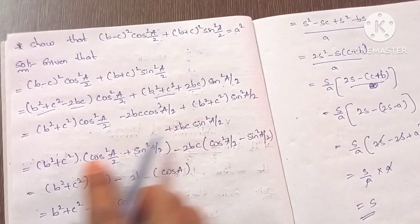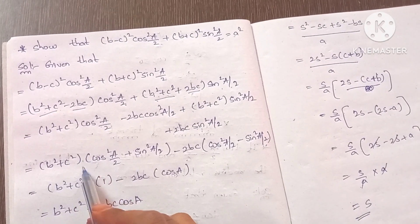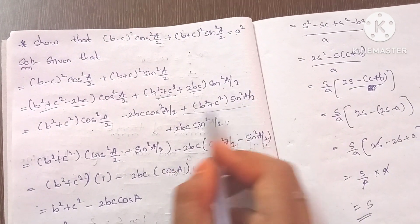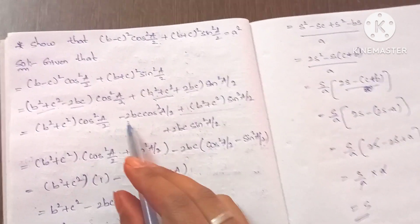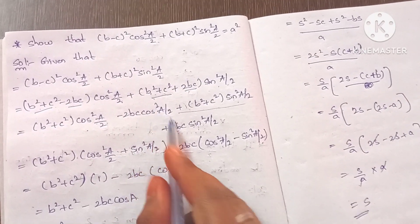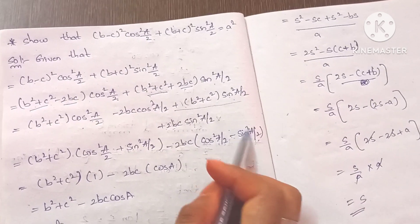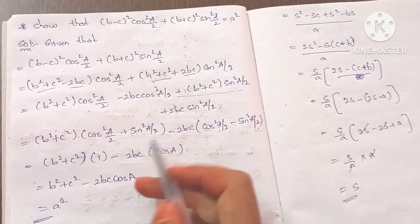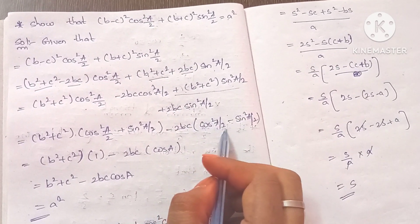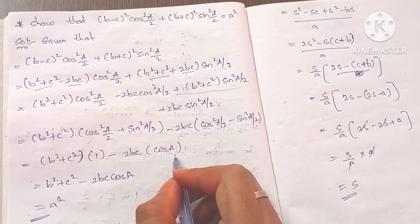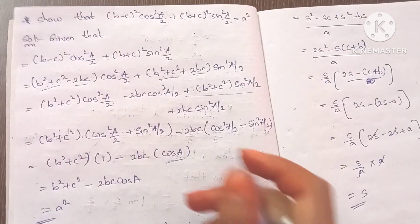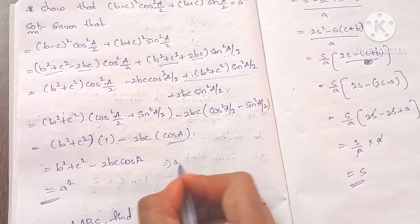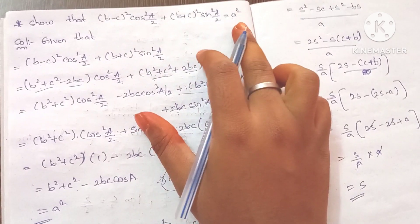Now we group common terms: b² + c² into (cos²(A/2) + sin²(A/2)), which equals 1. Then we have -2bc cos²(A/2) plus 2bc sin²(A/2), which gives -2bc(cos²(A/2) - sin²(A/2)). Using the identity cos²(A/2) - sin²(A/2) = cos A, this becomes -2bc cos A. So the result is b² + c² - 2bc cos A, which equals a² by the properties of triangle formula. Hence proved.